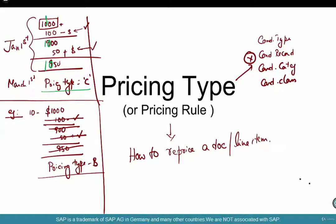So if the price has been changed from $1,000 to, say, $1,100, that change will now be included. So $1,100 minus $100 is $1,000, plus $50 is $1,050 — that's going to be our new price. This can only be done if you use pricing type C. So if you want to reprice an existing line item but include all manual changes, use pricing type C. These were some examples of pricing types that we have seen: A, B, C, G, H.